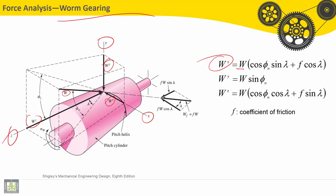Wx is equal to W times cosine phi N, this angle, times sine lambda, plus F, which is the coefficient of friction, times cosine lambda. The force along Y axis is equal to the resultant force times sine phi N.